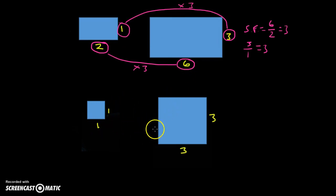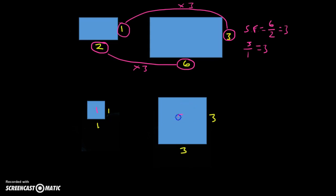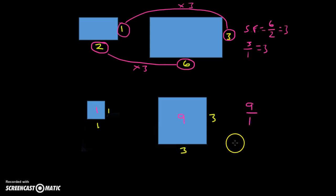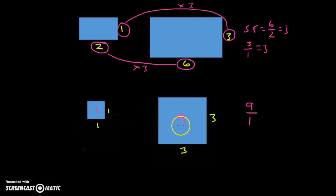Now moving on to area. We've got some squares here. A one by one square has an area of one — one multiplied by one. And the area of the three by three square — three times three — gives us nine. So the ratio of the areas is nine over one. Now you could possibly have a question saying: if we've got the area of the smaller square, and this square is a similar shape — squares are all similar to each other — how could we then find the area of the bigger shape?